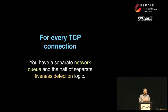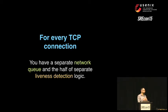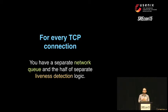For every TCP connection you have a separate network queue, and half of the liveness detection logic lives there. If I lose the other side, I don't know if the line is congested or if the other side is dead. If the other side is dead, I want to move on — I have 999 more machines in a 1,000-node cluster. There's no way we can wait for timeouts, and I need to really know if the system is capable of handling the load. TCP does not give us this support.